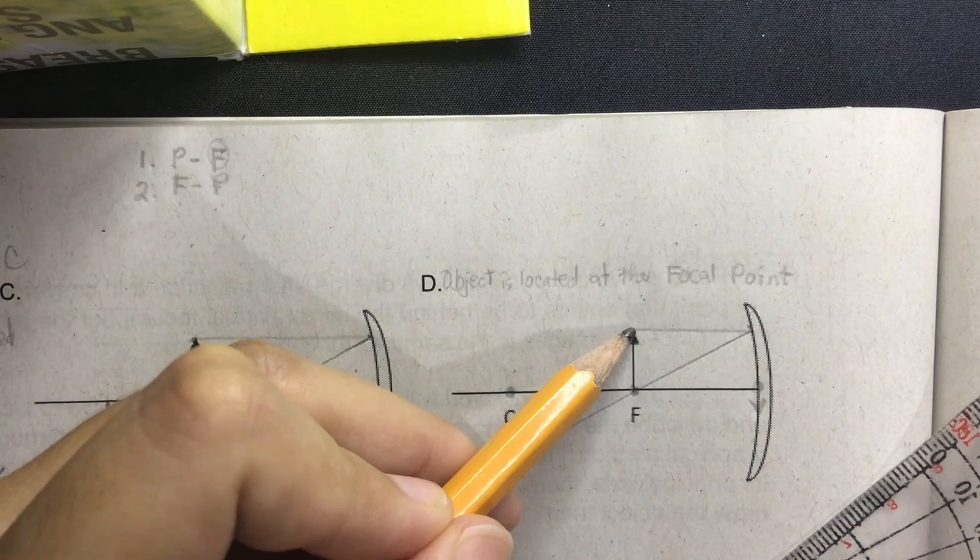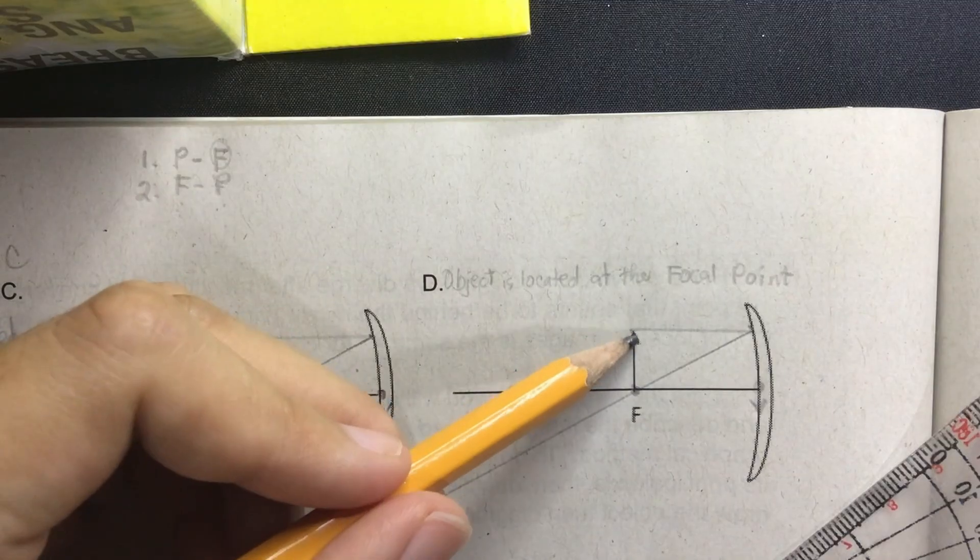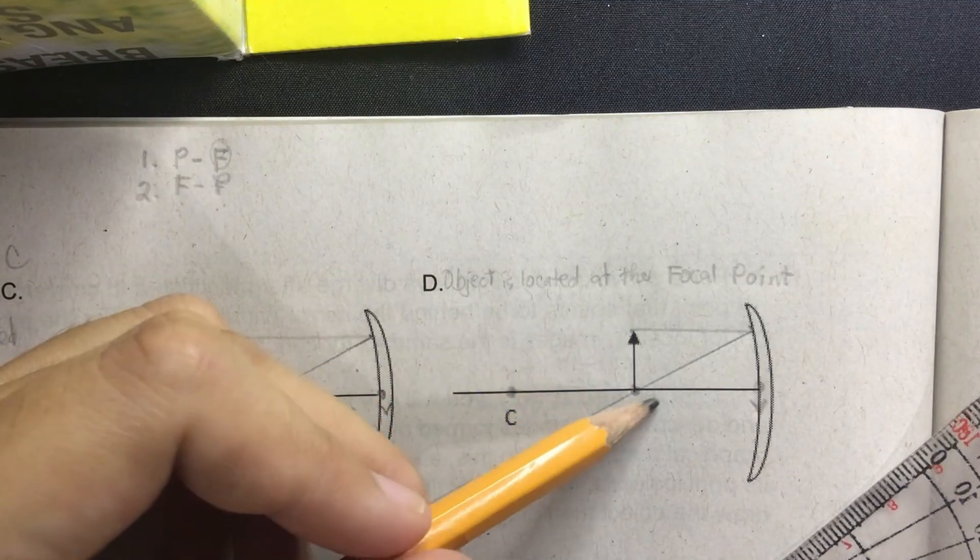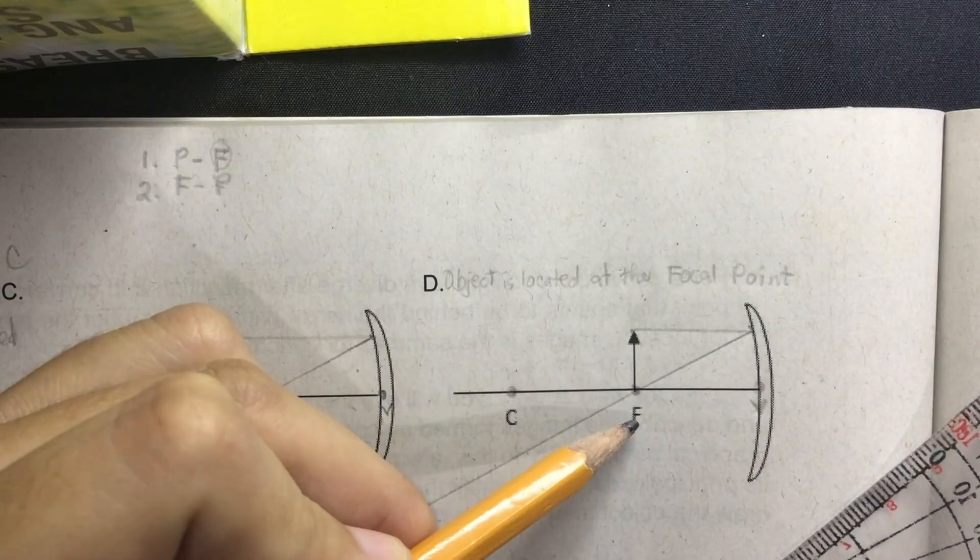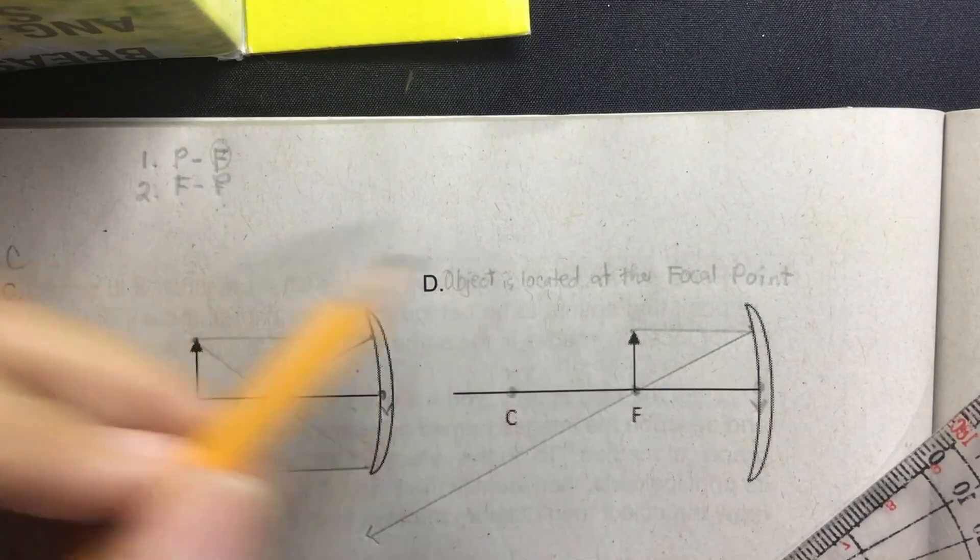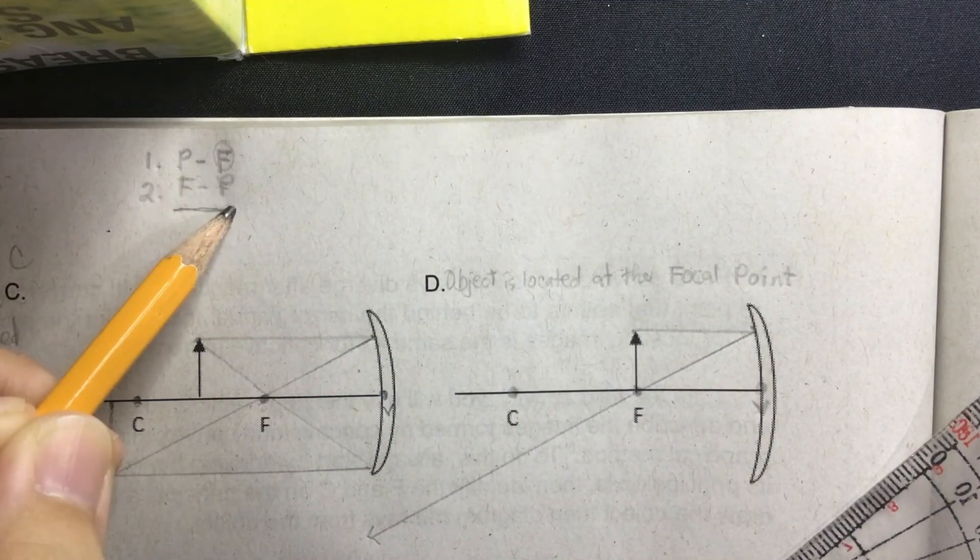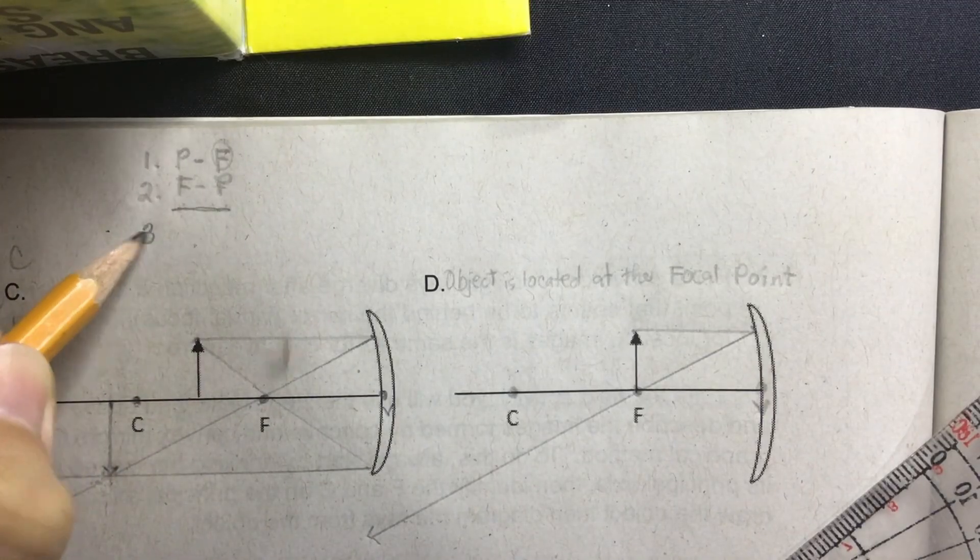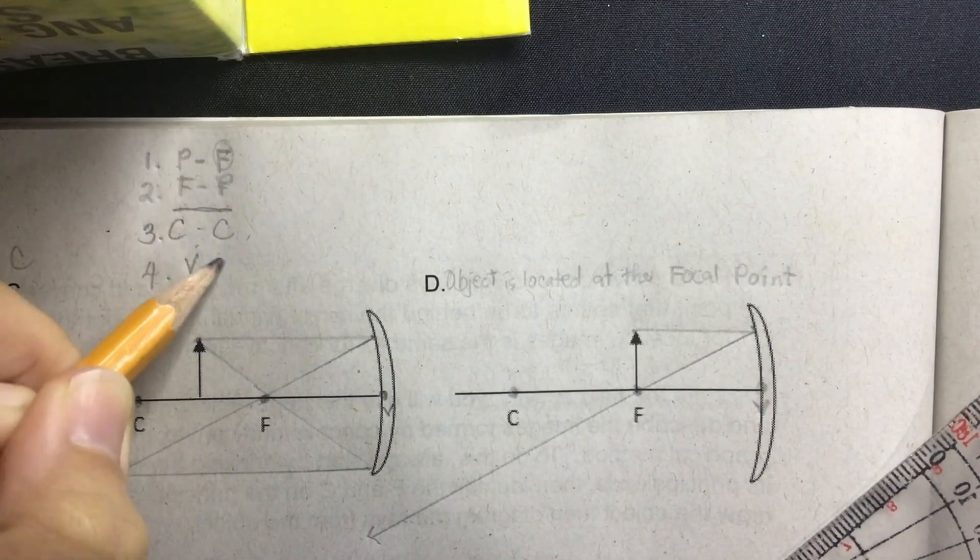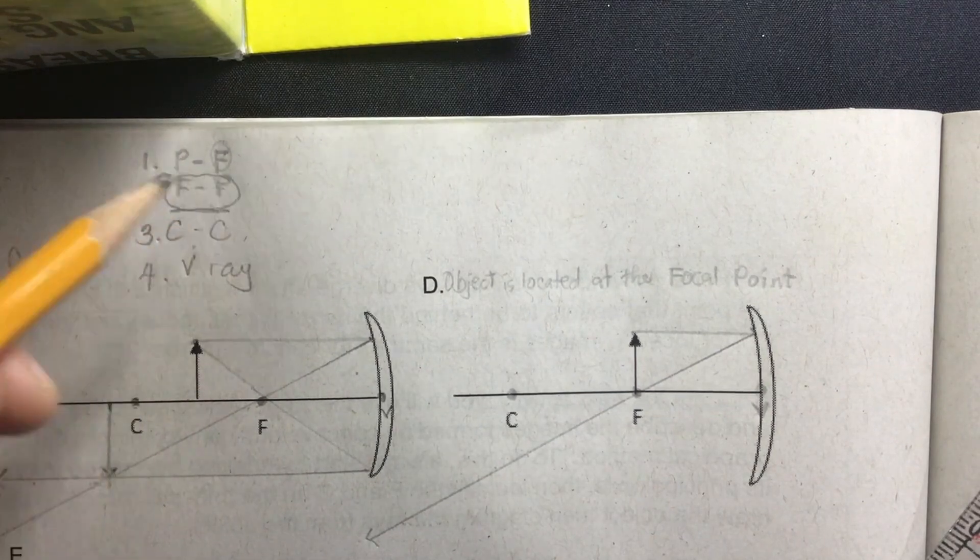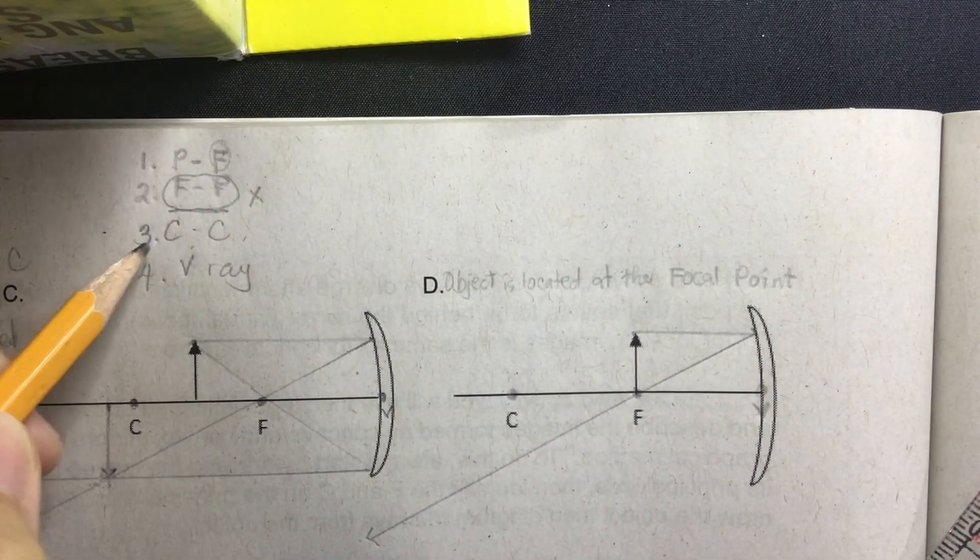But this time, class, since our object is situated right at the focal point, the FP ray is impossible to do. That's why we need to choose between CC ray and V ray. FP ray cannot be done in this diagram, so let's choose which we are going to use. Is it CC or V ray?